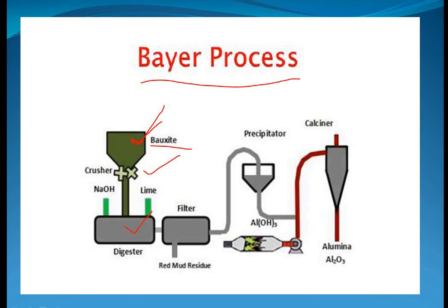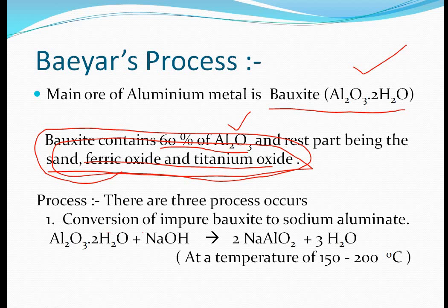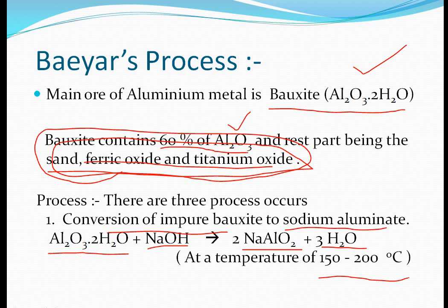After grinding, the bauxite ore goes into a digester box where it is mixed with NaOH (sodium hydroxide) and some water. The bauxite ore reacts with sodium hydroxide and is converted to sodium aluminate (NaAlO₂) with a few water molecules removed. This reaction is carried out at a temperature of 150 to 200 degrees Celsius and requires 2 to 8 hours to complete.